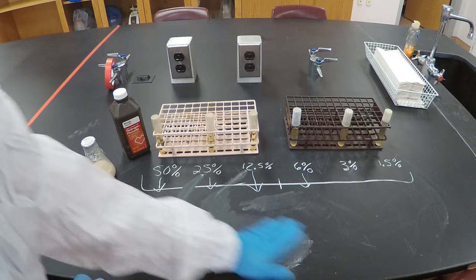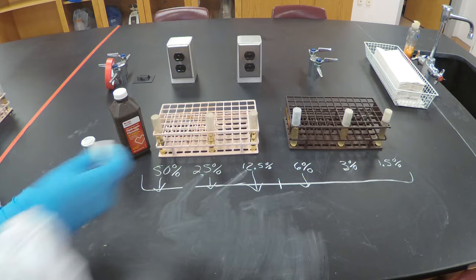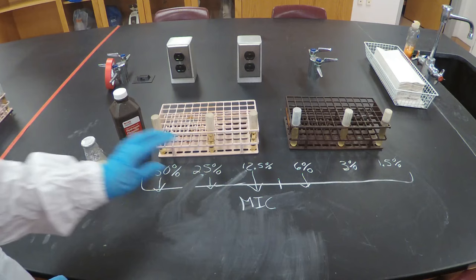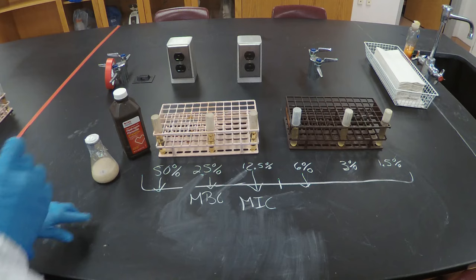To summarize: 12.5% hydrogen peroxide is the minimal inhibitory concentration — the minimal concentration needed to stop the bacteria from growing. And 25% hydrogen peroxide is the minimal bactericidal concentration — the minimal concentration needed to kill every single bacterial cell in the tube.